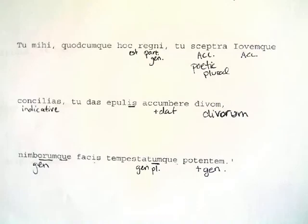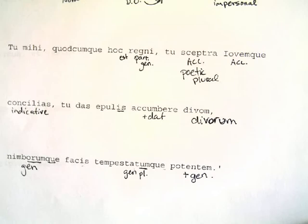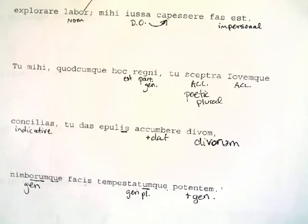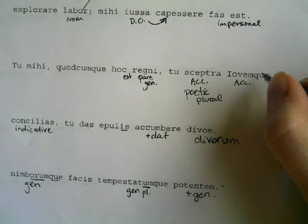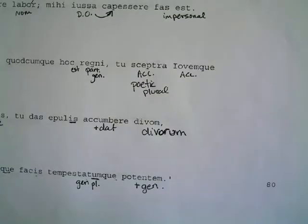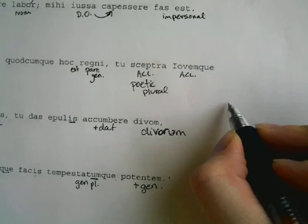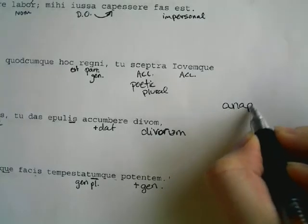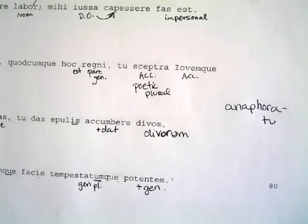One more thing to note: in lines 78 and 79, tu appears repeatedly at the beginning of successive clauses — 'you do this, you do this, you do this.' Repetition of the same word at the beginning of successive clauses is called anaphora, and it's very emphatic. Aeolus is saying: you are the one who does all this for me. Obviously he is going to give in to her request and give her whatever she wants.